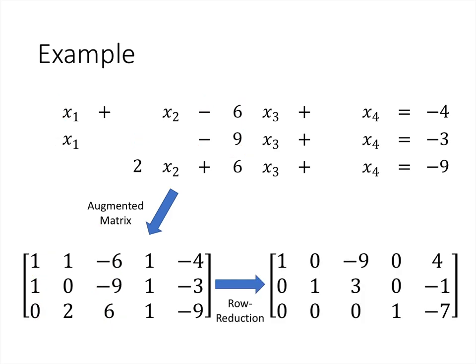When we perform the row reduction operations we can put this matrix into reduced echelon form. Now we want to think about what that tells us about the original system of equations. Remember that since each of the row operations is reversible, any solution to the system of equations obtained from one of those operations is going to be the same regardless of the operation that we did. So the equations we get from the reduced echelon form are easier to think about, and their solutions are the same as the solutions of the original set of equations.